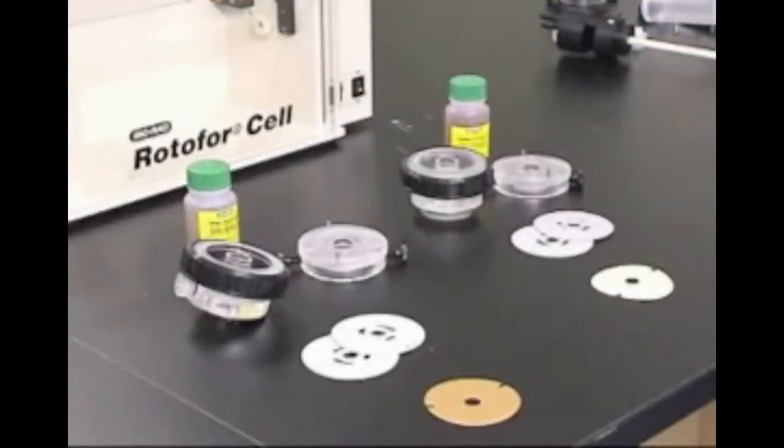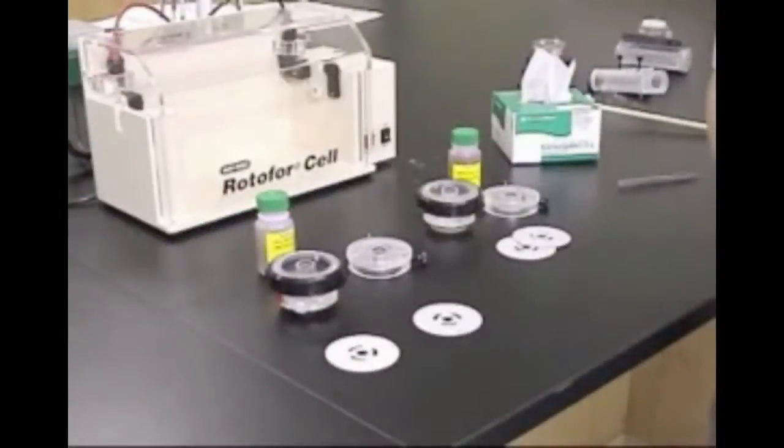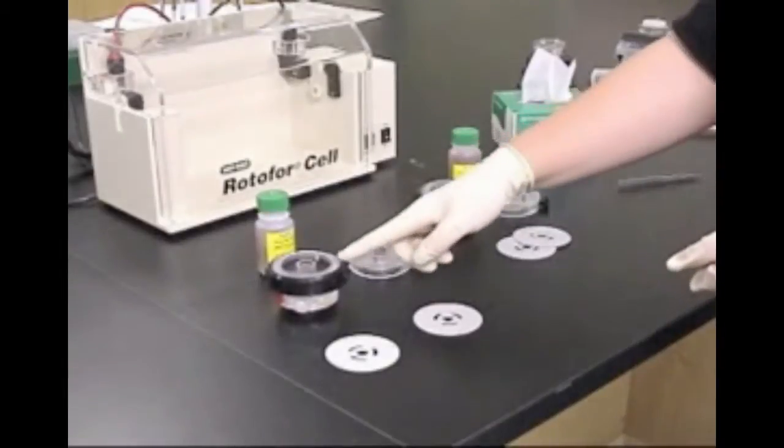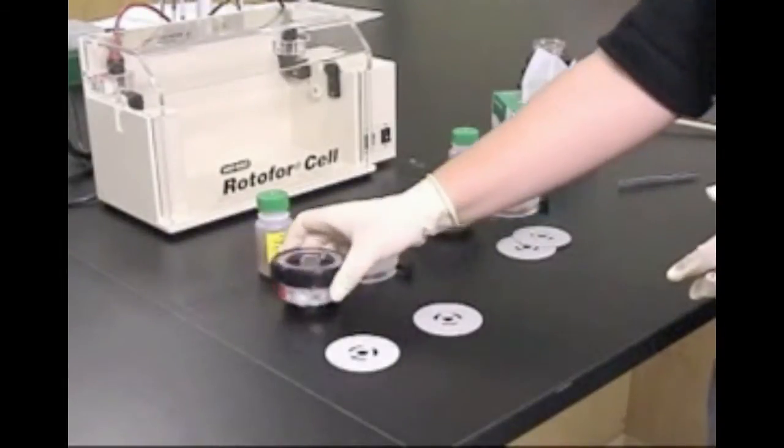To avoid mistakes in assembly that can lead to leakage of electrolyte or sample or to the drying of ion exchange membranes, first assemble both chambers without the membrane to ensure that all of the components fit properly.